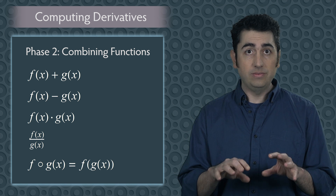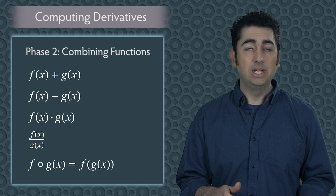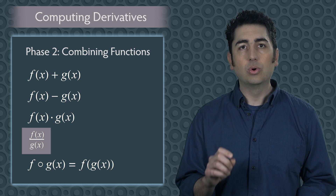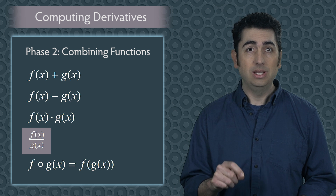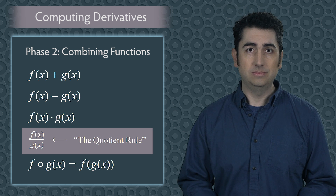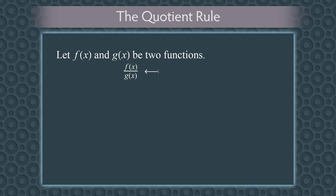Luckily there's a derivative rule for each of these five operations, and today we're going to talk about the rule for division, and that's called the Quotient Rule. Let f and g be two functions. You can make a new function by dividing f by g. We call this the Quotient.